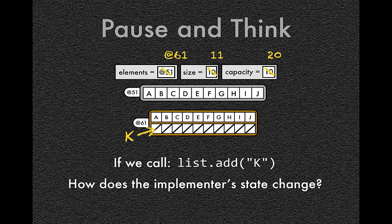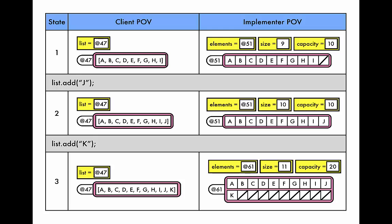And what happens to that old array? Well, since elements, the field elements, was the only variable referencing it, Java's garbage collection algorithms, which are constantly running in the background, are eventually going to come along and reclaim that memory space. And this is what the final tracing table looks like.